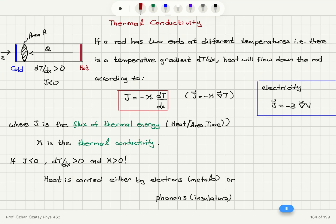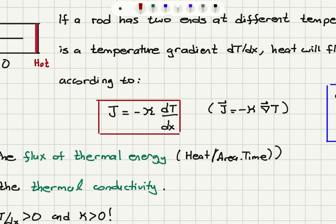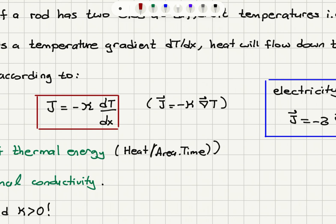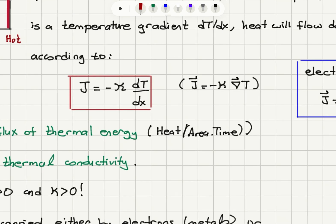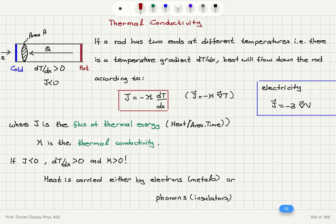The law of thermal conduction states that the heat flux j is equal to minus a coefficient called thermal conductivity kappa times dT/dx. In three dimensions we can write this as j vector equals minus kappa times the gradient of temperature. So j is the flux of thermal energy — the heat that flows per area per unit time — and kappa is our thermal conductivity.